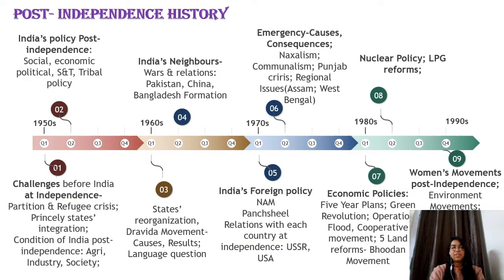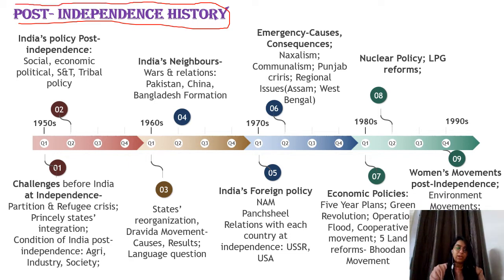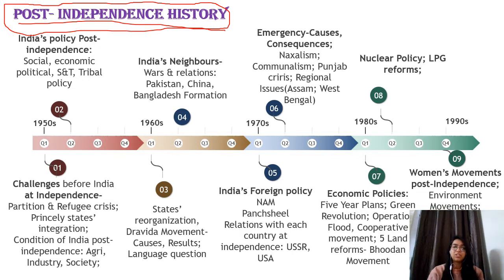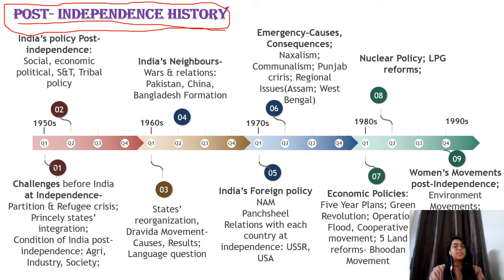In post-independence history, there are questions in both mains and prelims, but their proportion is not very large. That means every part is important — even one question makes a very big difference. So you have to prepare for each topic, but you don't need to invest too much time. Give it around 15 to 20 days, and try to complete the book and cover the detailed topics we will discuss here.